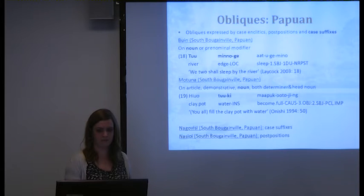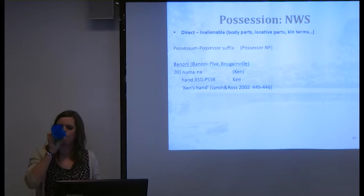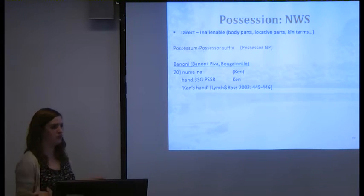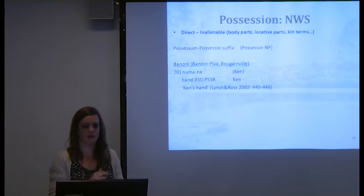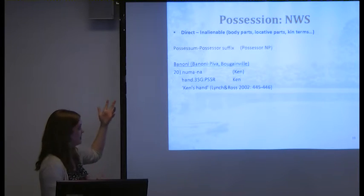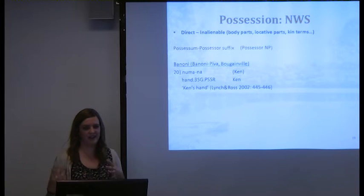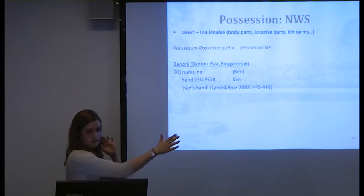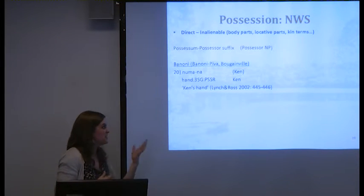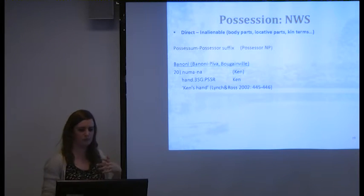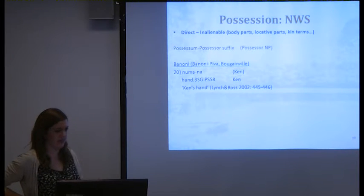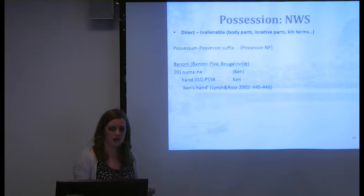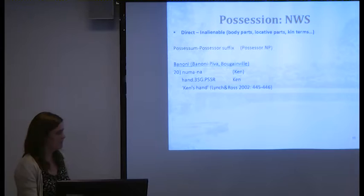Moving on to possession: in Northwest Solomonic languages there are two constructions. The direct construction is used for inalienable nouns — body parts, locative parts, and kin terms. The possessum has a possessor suffix attached to it, and if a possessor noun phrase is present it always occurs post-posed after the possessum, though it doesn't have to be there. For example in Benoni, NURMANA means 'his hand', and NURMANA KEN means 'Ken's hand'. This optional possessor NP always occurs after the possessum.